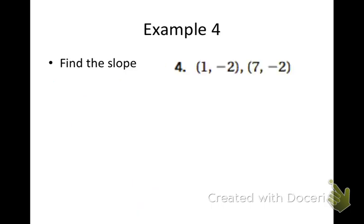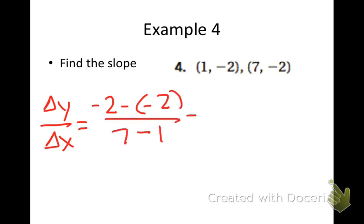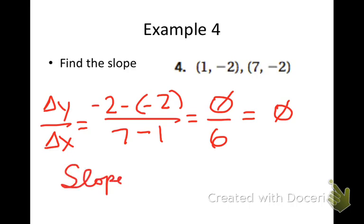Sometimes we're just given ordered pairs and we calculate the slope. So the change in y over the change in x would be negative 2 minus negative 2 over 7 minus 1. Negative 2 minus a negative is negative 2 plus 2 or 0 over 6, which gives us a slope of 0 because anything 0 divided by anything is automatically 0. And this is the slope of a horizontal line.